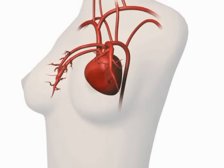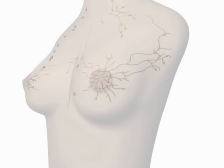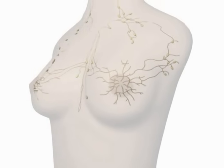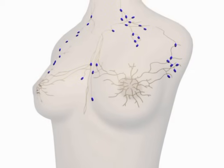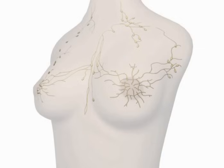Blood circulates through the breast, bringing nutrition and oxygen to the cells of the area. The lymphatic system also travels through the breast, ending at lymph nodes on the edges of the breast, especially in the region of the armpit and the collarbone. The lymph nodes collect cellular debris and help initiate immune responses to anything threatening, such as bacteria or viruses.